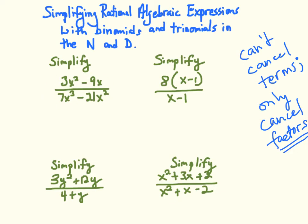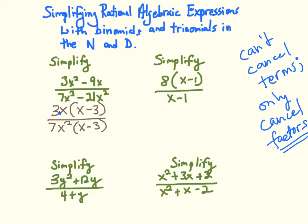We've got to get this in factored form, then we can cancel common factors. If I factor out the greatest common factor of the two terms in the numerator, I'll have 3x on the outside, leaving me with x minus 3. I'll do the same in the denominator — factor out 7x squared using the reverse distributive property, leaving x minus 3. So I have factors 3, x, and (x minus 3) in the numerator and 7, x squared, and (x minus 3) in the denominator. There's an extra x in the denominator, and I can cancel the (x minus 3) factors, leaving me with 3 over 7x.